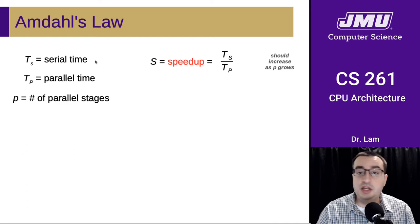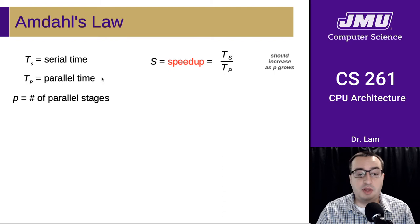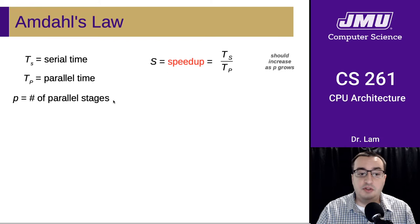T sub S is the amount of time that it takes to run some instructions or a program in serial or sequentially. T sub P is the amount of time that it takes to run those instructions or that program in parallel. And P is going to be the number of parallel stages.